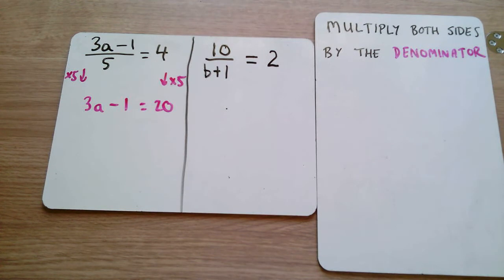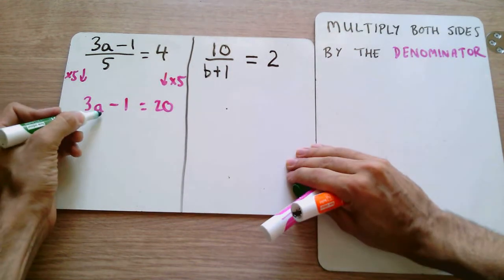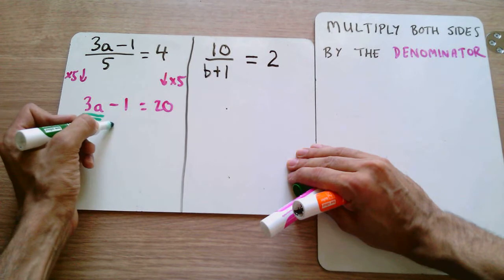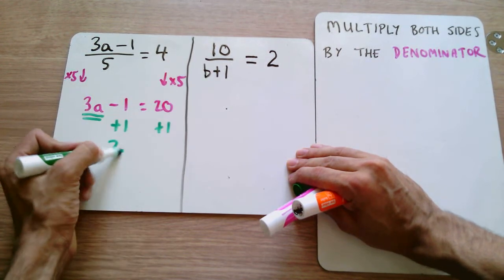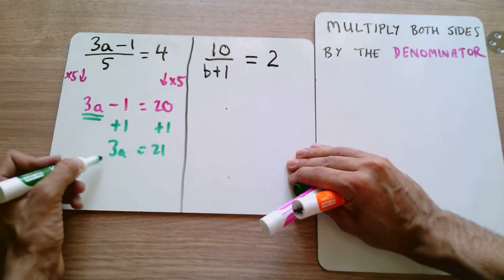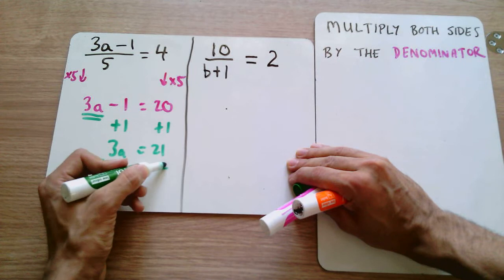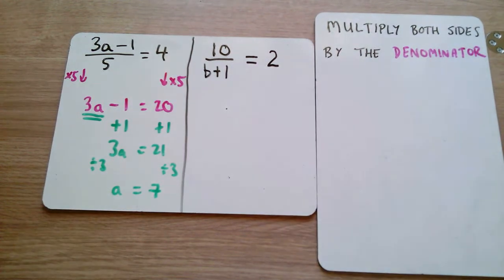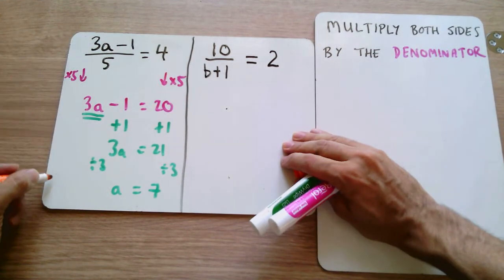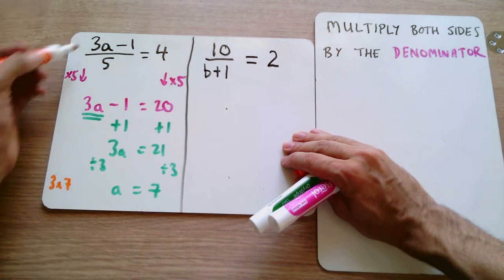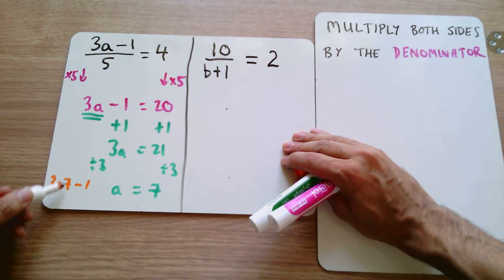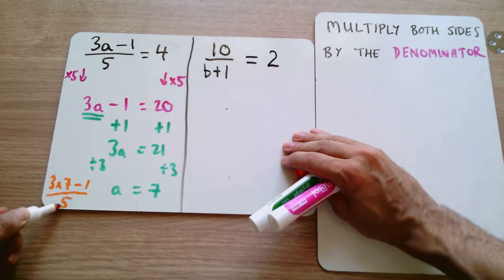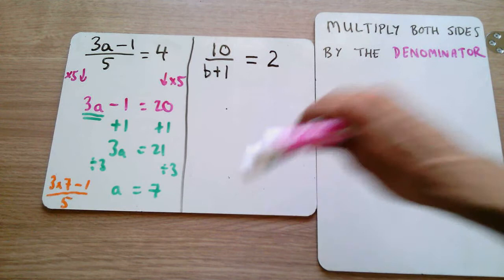Now we solve this like a normal linear equation, isolating the term with the unknown. We want to isolate the 3a term, so we add 1 to both sides, giving us 3a equals 21. Then we divide both sides by 3: a equals 7. Let's verify: 3 times 7 minus 1 is 21 minus 1, which is 20. And 20 divided by 5 is indeed equal to 4. So that's correct.